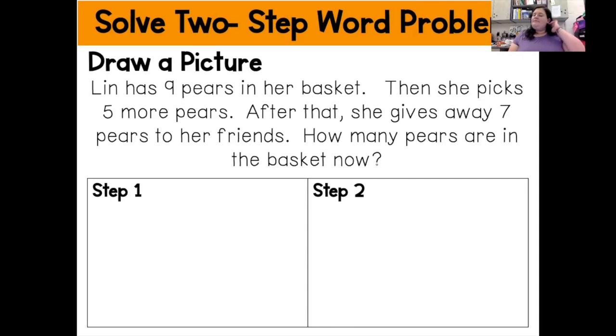So let's just look at this word problem right here. And it says, Lin has nine pears in her basket. Then she picks five more pears. After that, she gives away seven pears to her friends. How many pears are in the basket now? Well, I'm going to go ahead and I'm going to circle my numbers. So there are nine pears and then she picks five and then she gives away seven. I'm also going to go ahead and underline my question, which is how many pears are in the basket now? And that's the question I need to solve for step number two. And then finally, I'm going to box in my clue words. So Lin has nine pears in a basket. She picks five more. And then she gives away seven pears to her friends.